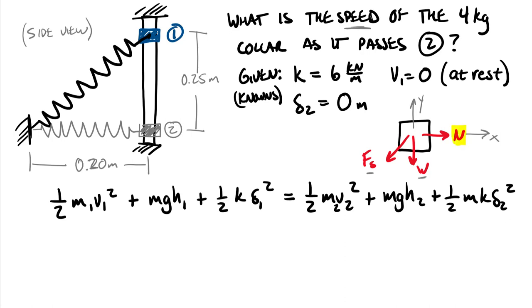The normal force N doesn't appear as an energy term, and we're also not including it as a work term. The reason is that this normal force does no work. Work is the dot product of force and displacement. The displacement in this problem is vertical — from location one to two — while the normal force is horizontal. Dotting a horizontal force with a vertical displacement gives zero, so the normal force contributes no work. It is always worth drawing a free body diagram even on a conservation of energy problem.